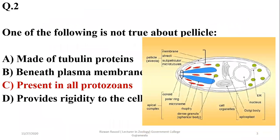As shown in the diagram, just below the cell membrane, alveoli, alveolar tubules, or subpellicular microtubules can be observed. These structures, made up of microtubules or tubulin protein, provide a rigid shape to the cell.